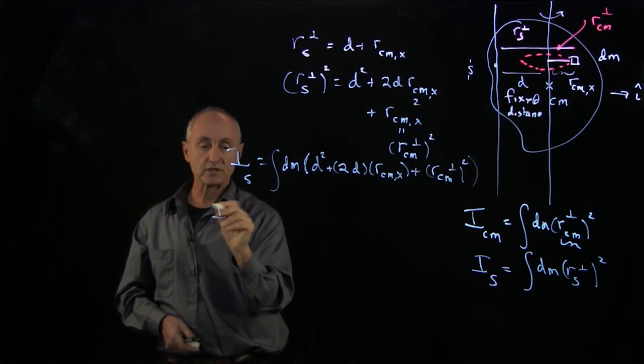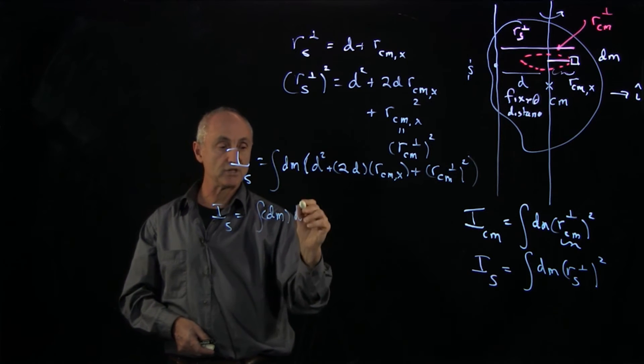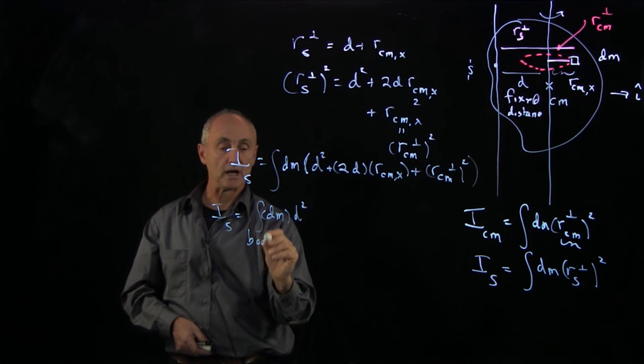Now, I'll separate this into three terms. The first term is dm times d squared. This is an integral over the body.